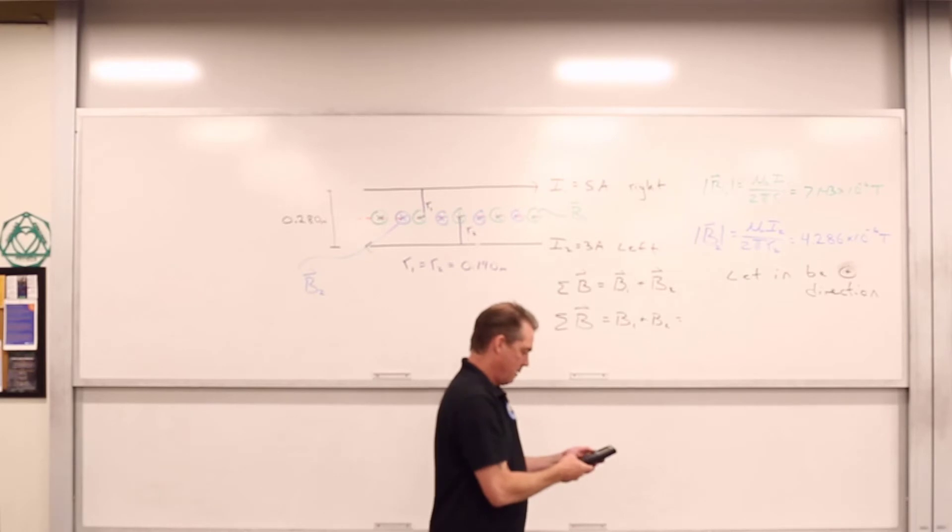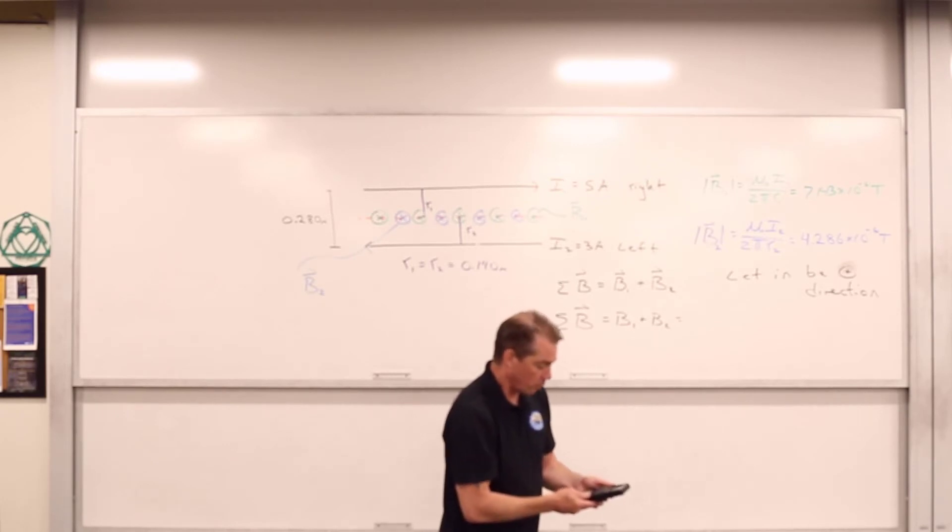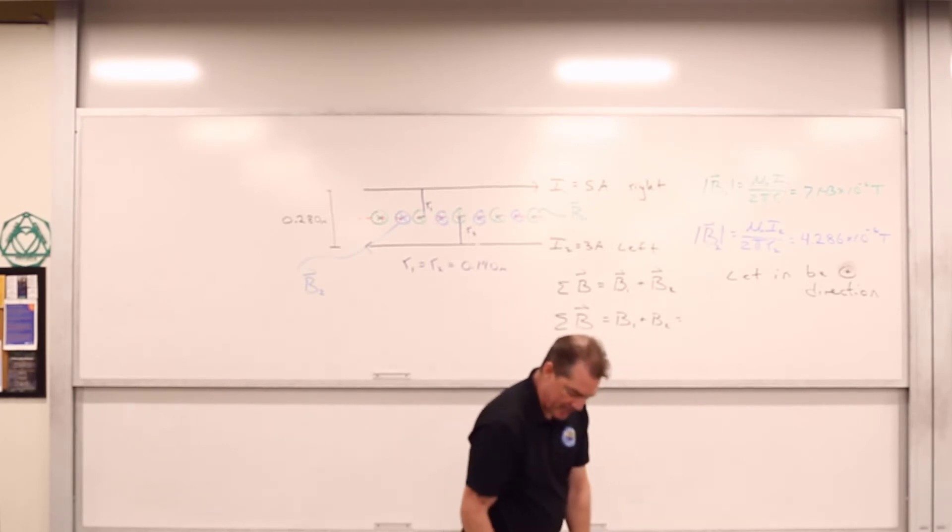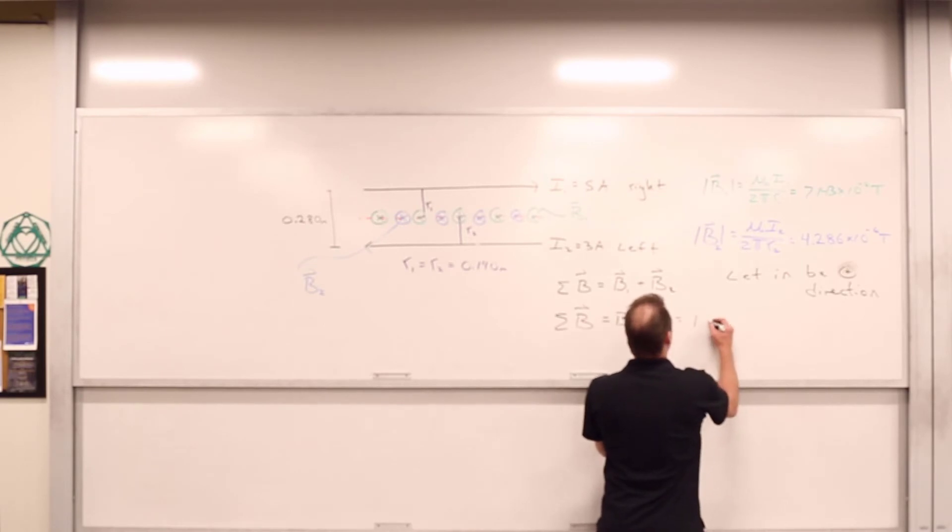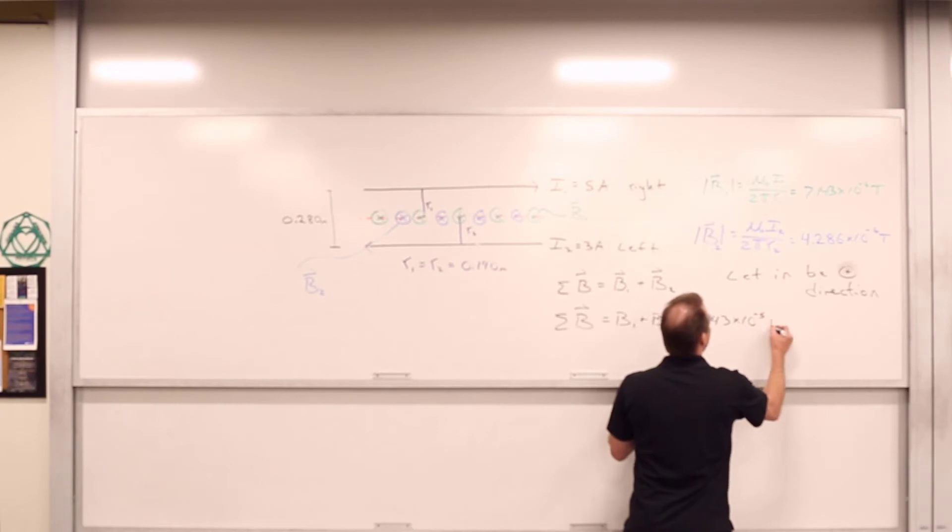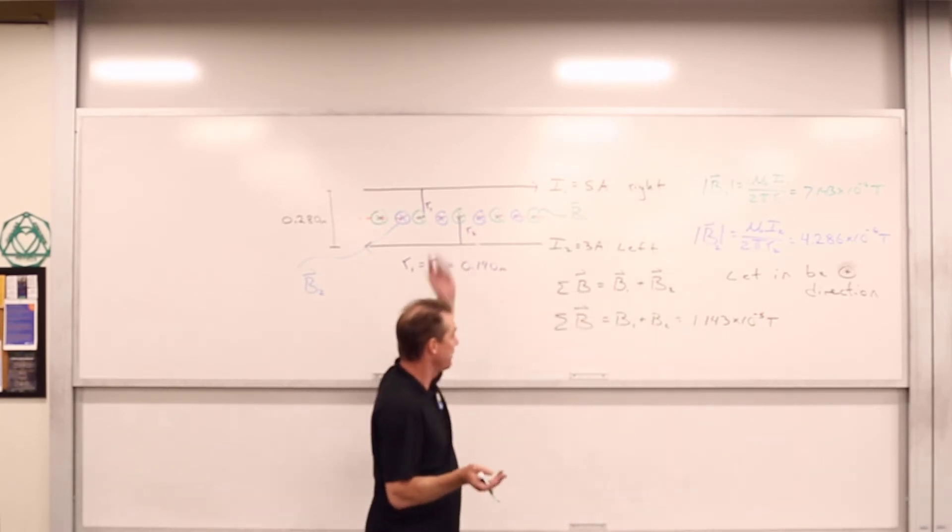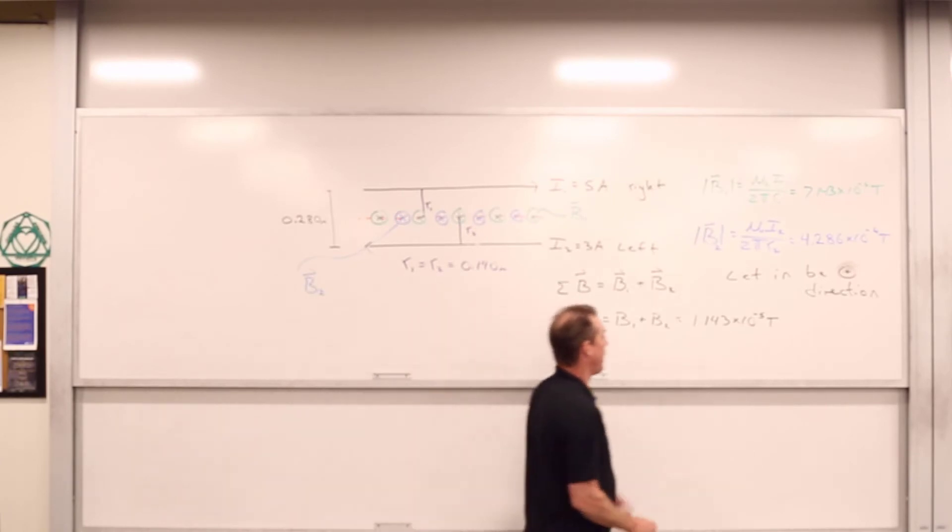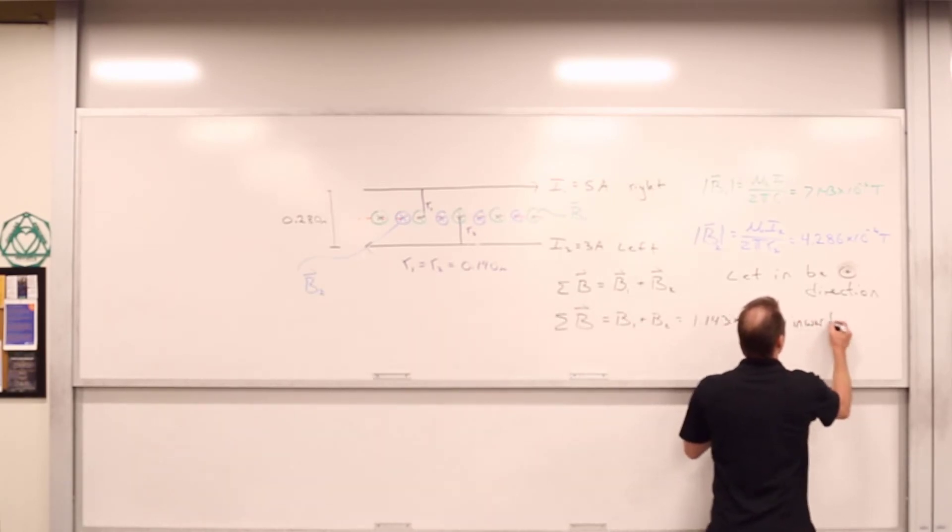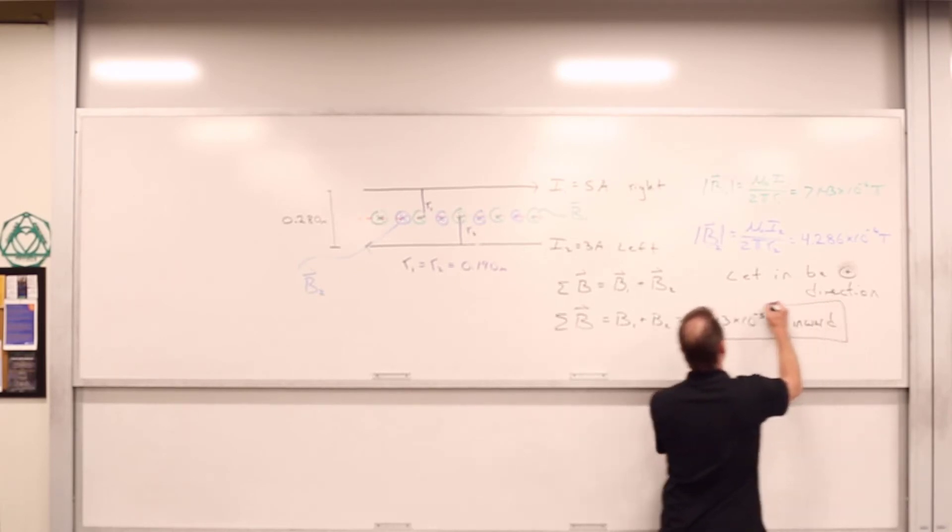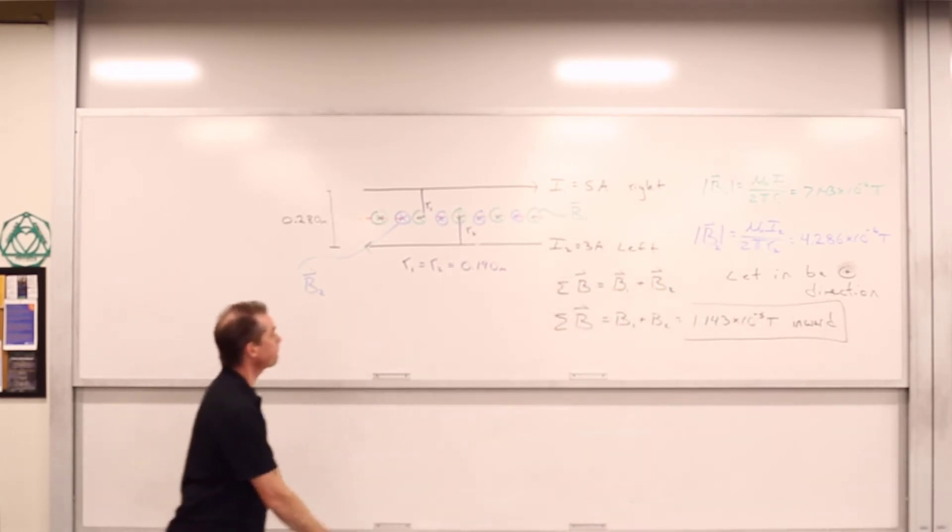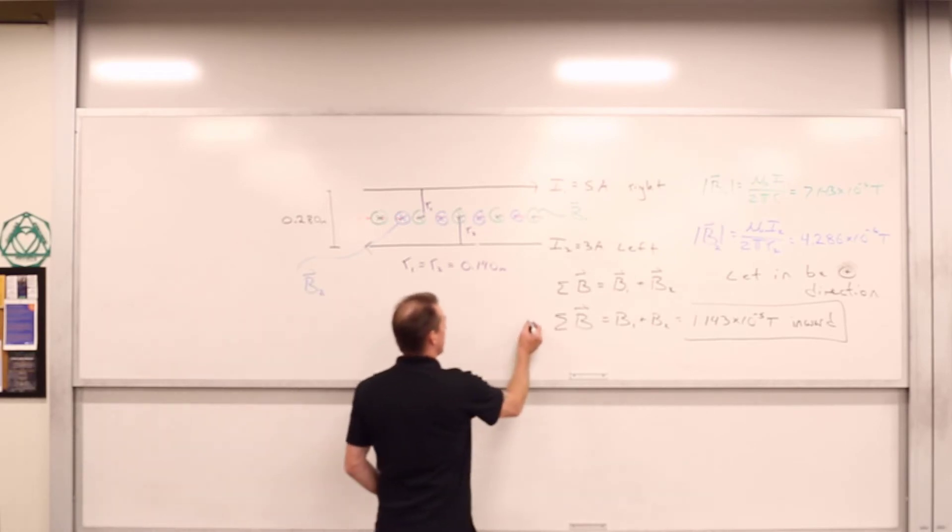Okay, so we've got that plus 7.143 plus 4.286 gives us 1.143 times 10 to the negative 5, 1.143 times 10 to the negative 5 Tesla. And it came out to be positive. Oh yeah, they're both positive. I mean, they're both inward, which we call positive. So we can say the direction there being inward. So that was part A.